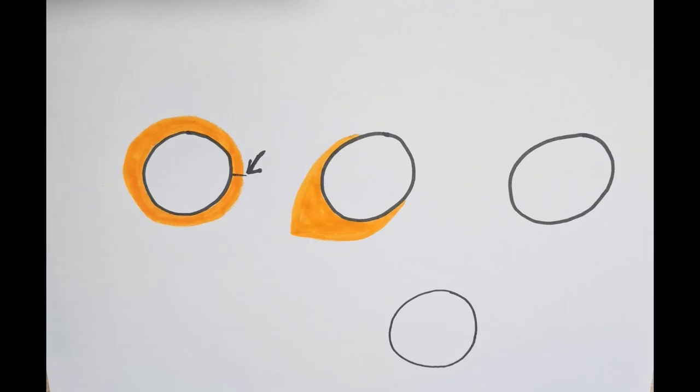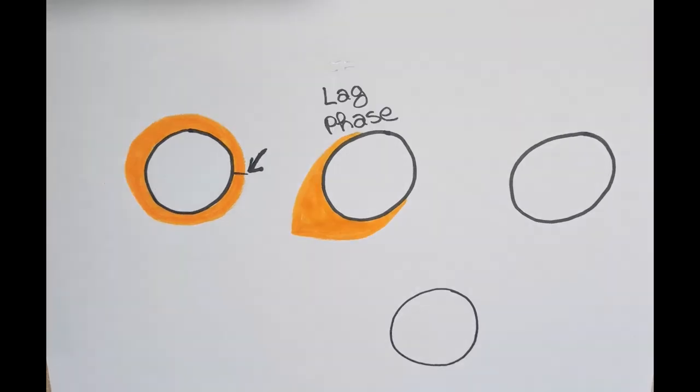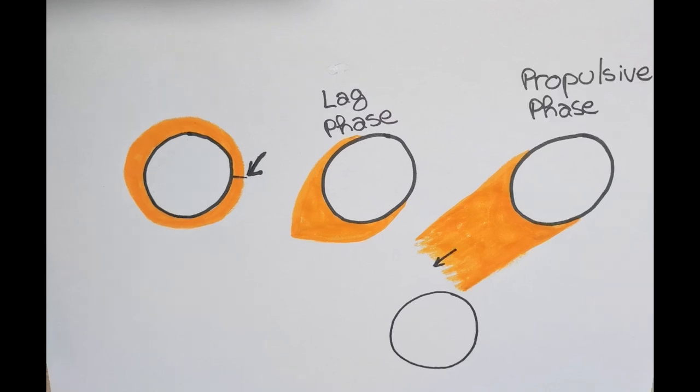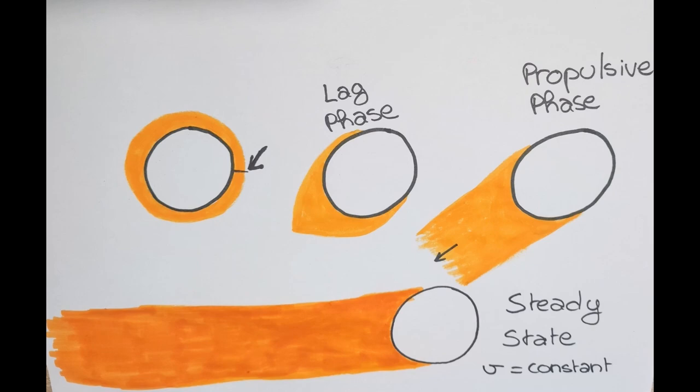This broken symmetry allows a lag phase of tail formation. This tail grows during the propulsive phase, to finally reach steady state with a constant velocity.